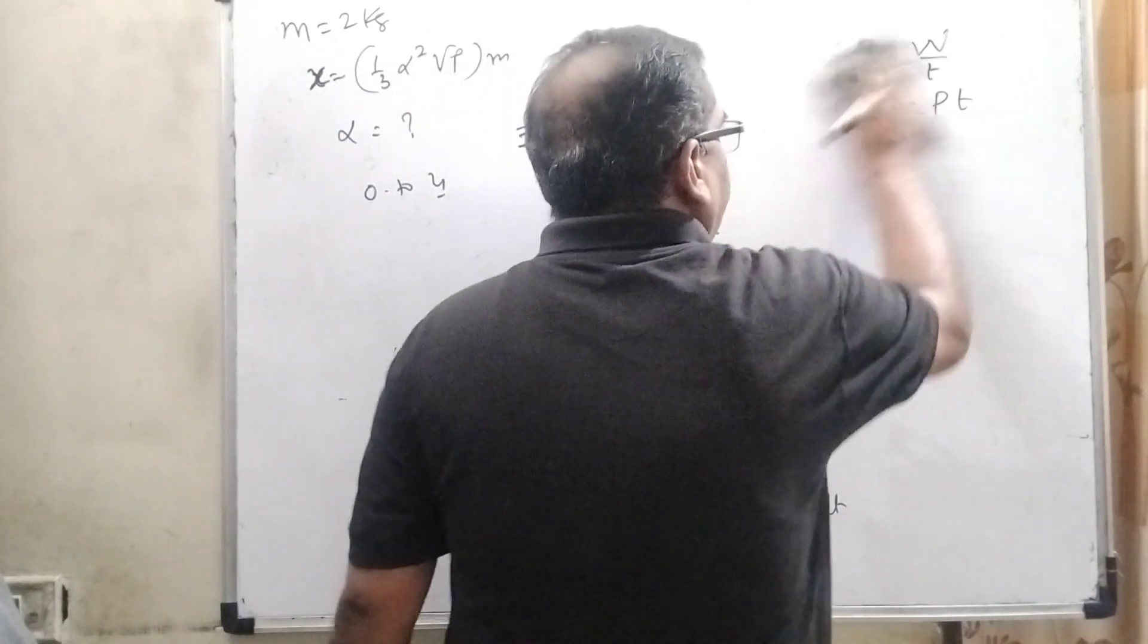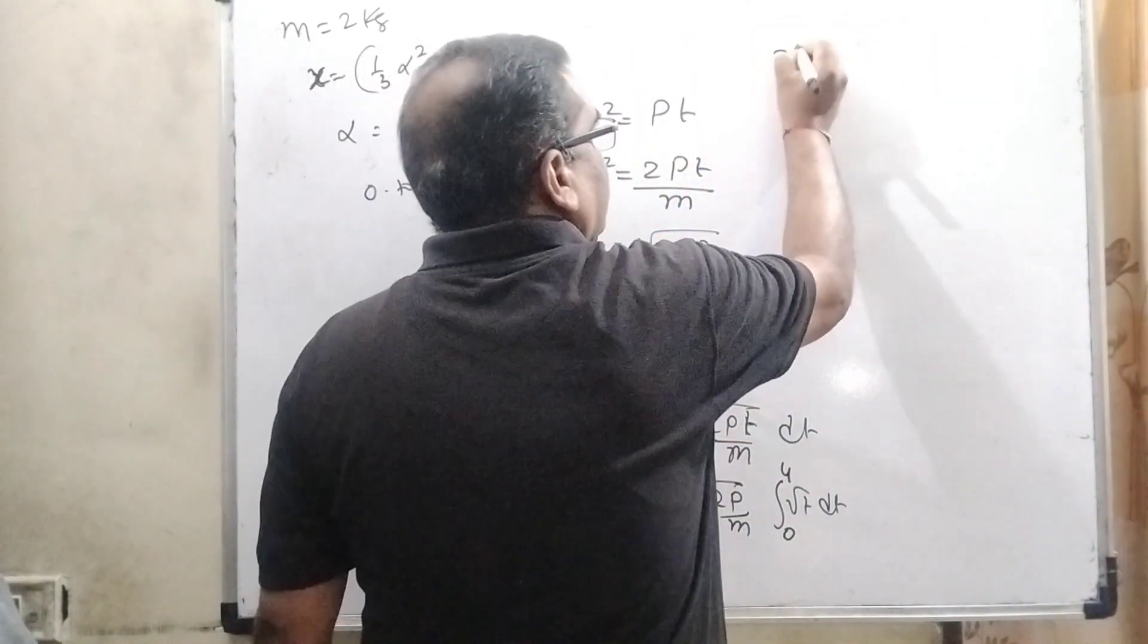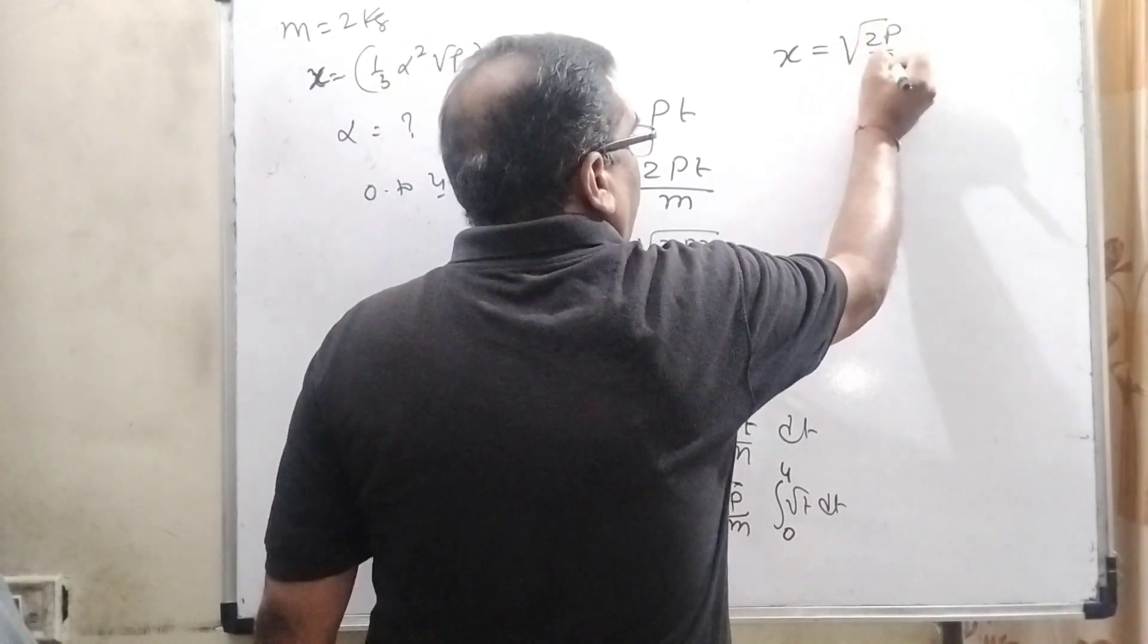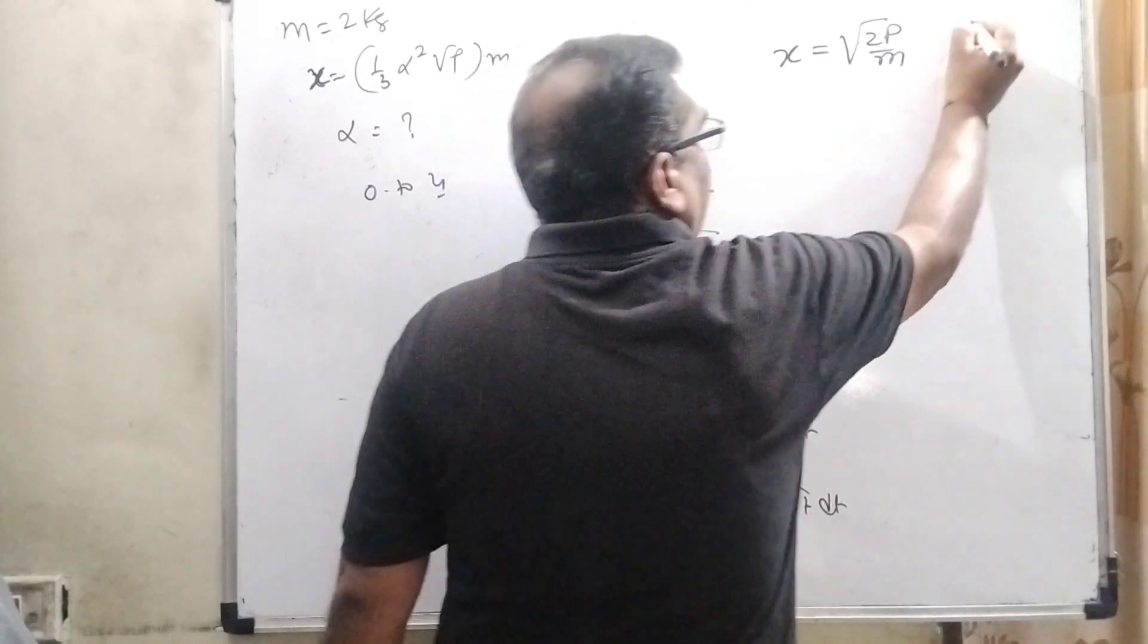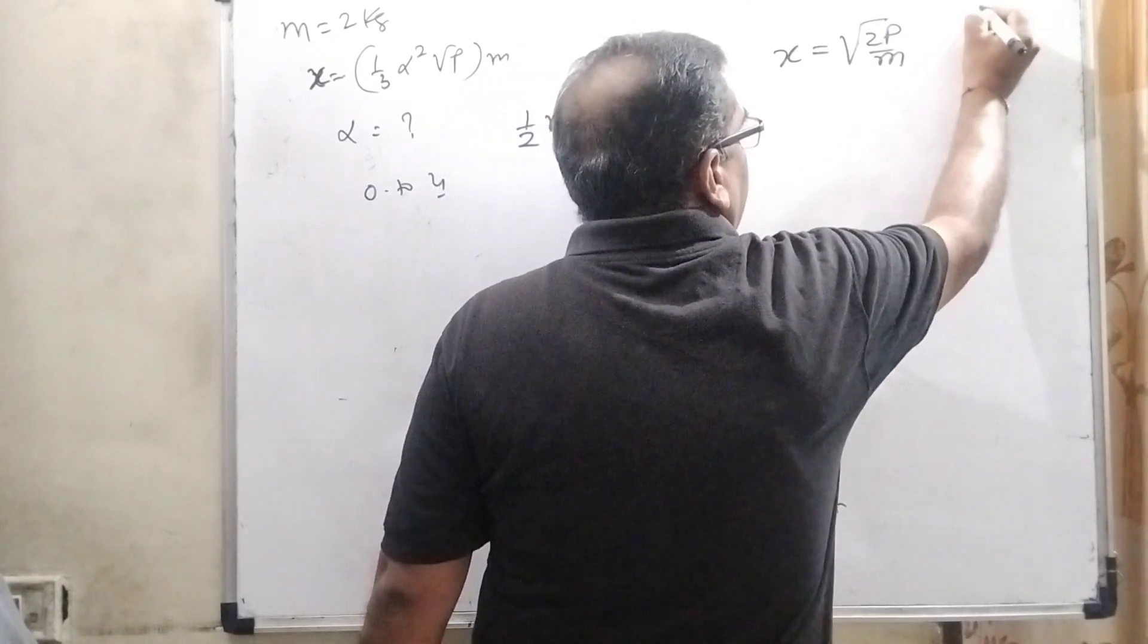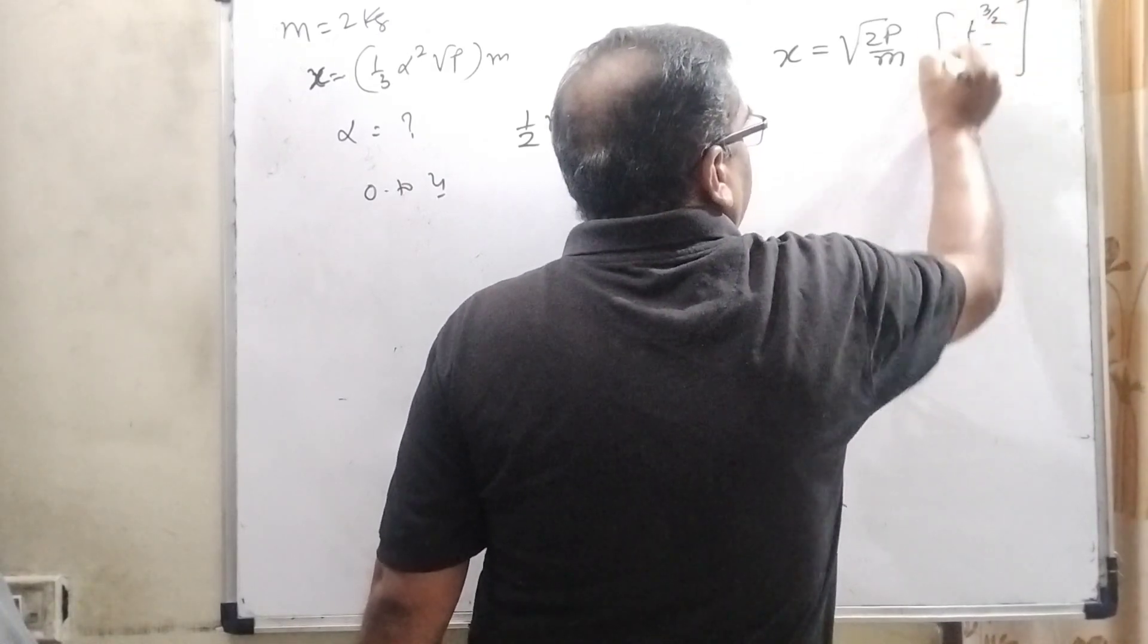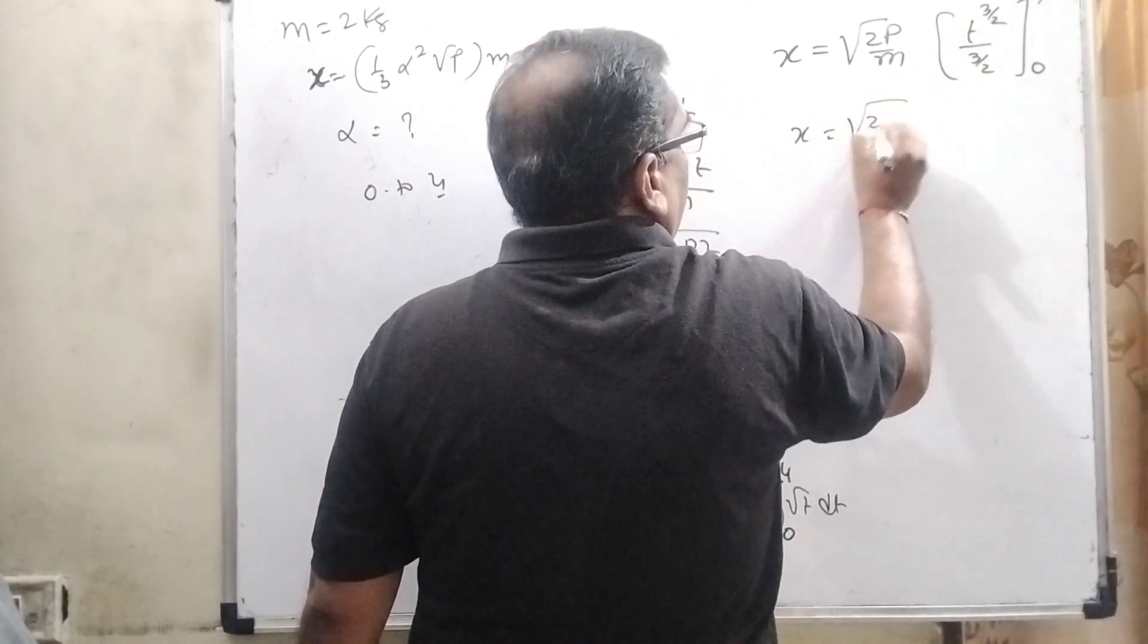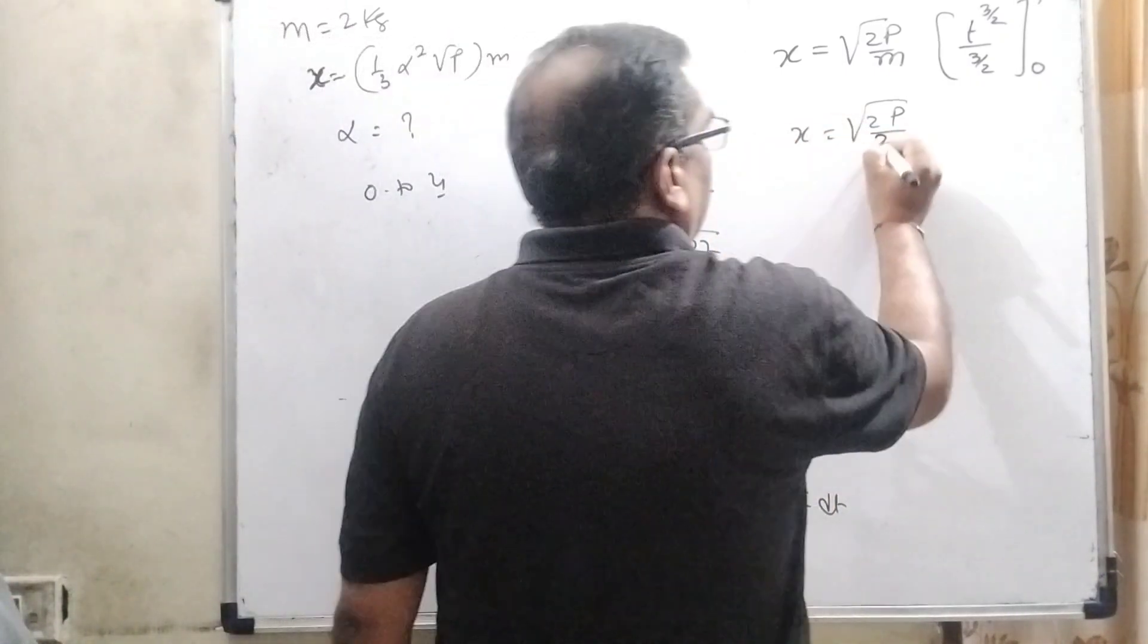We have to integrate dx, which means x equals √(2P/M) times integral of √T dt, which is T^(3/2) divided by (3/2) with limit 0 to 4. The value of M is given as 2 kilograms.